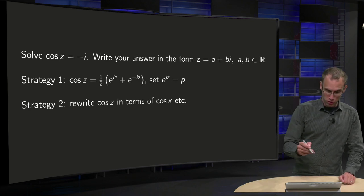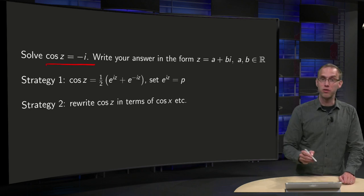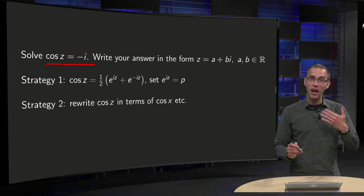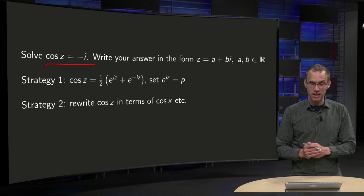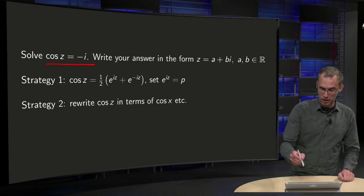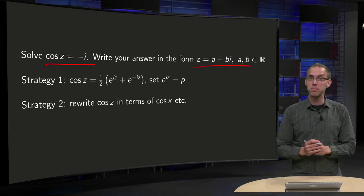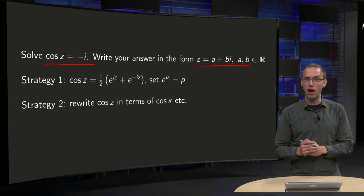We want to solve the problem cosine z equals minus i, and we want to know the values of z. We want to write them in the form z equals a plus b times i, where a and b are both in ℝ.